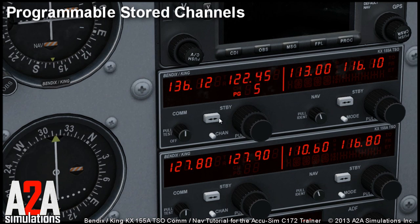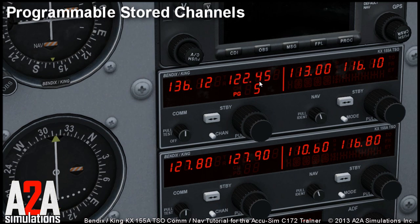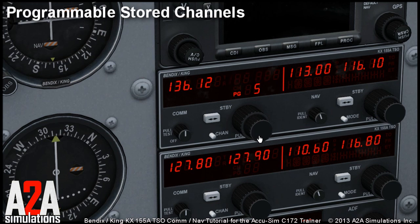Press the transfer button to switch the edit row from the channel to the frequency. Now we have selected channel 5 and we can program the frequency for that channel. When you are done, simply press the channel button again, and as you can see, under channel 5 we now have the frequency we just entered.